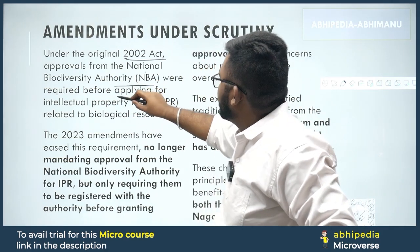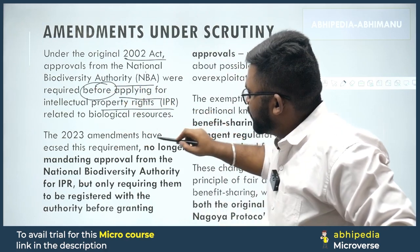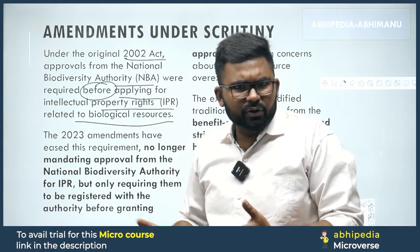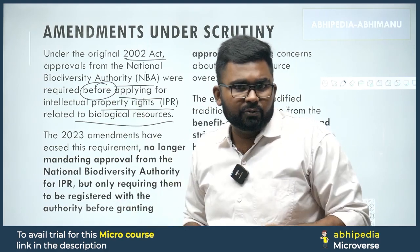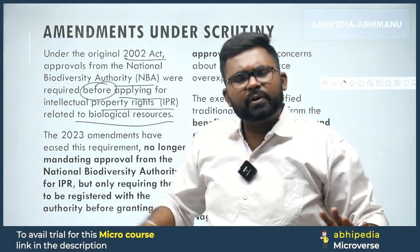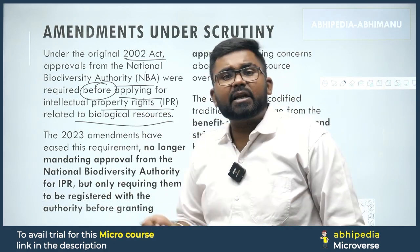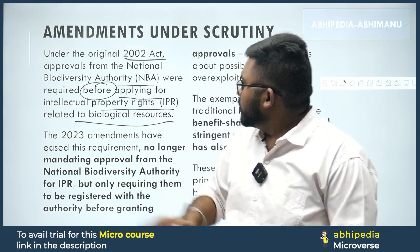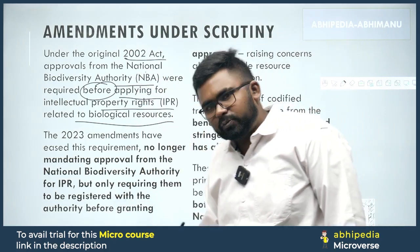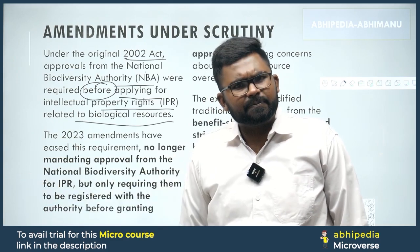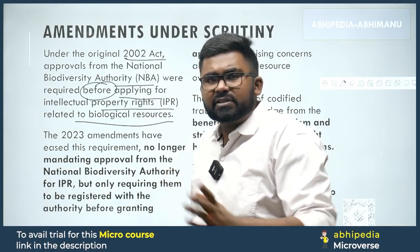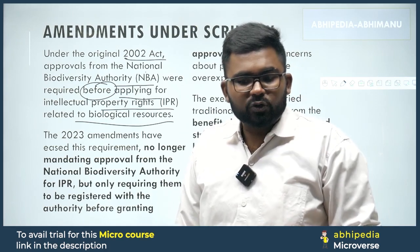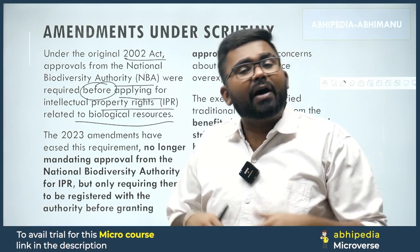Approvals from the NBA were required before applying for IP rights — intellectual property rights — related to biological resources. For example, if you find a particular herb with medicinal qualities, whether in the Himalayas, in forests, or in the South, and you want to make it into intellectual property — when you commercially exploit that particular biodiversity, that is not good for the environment.